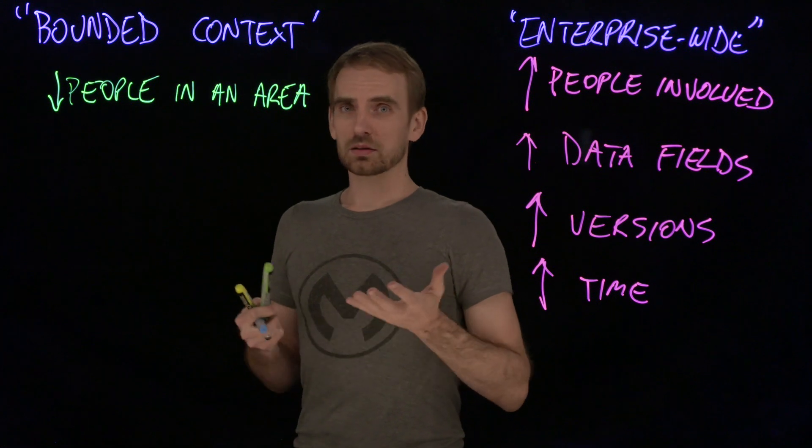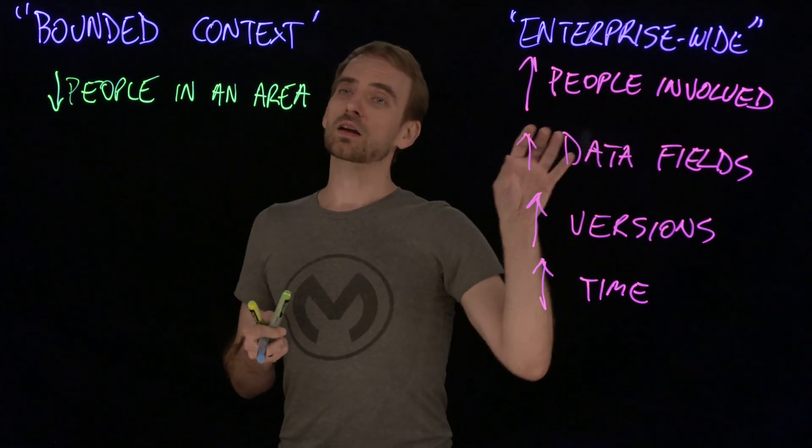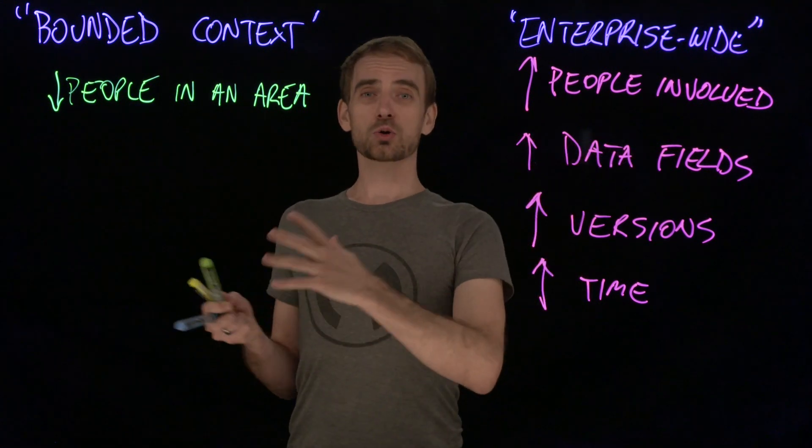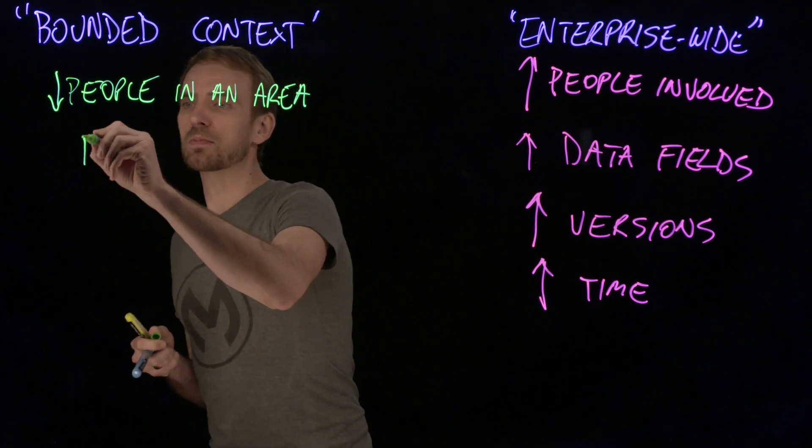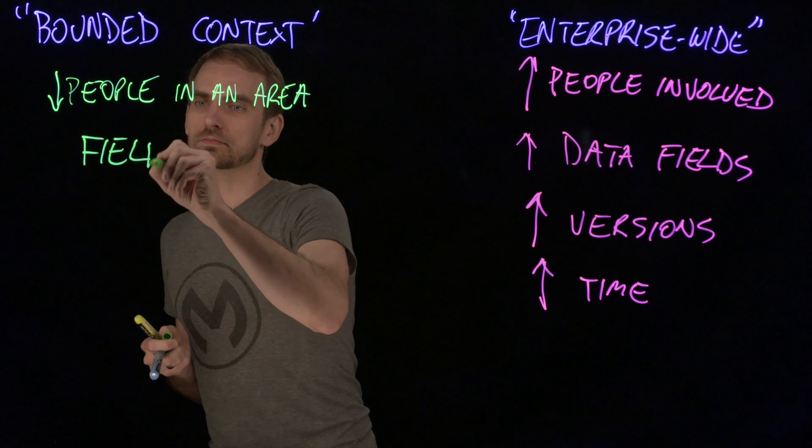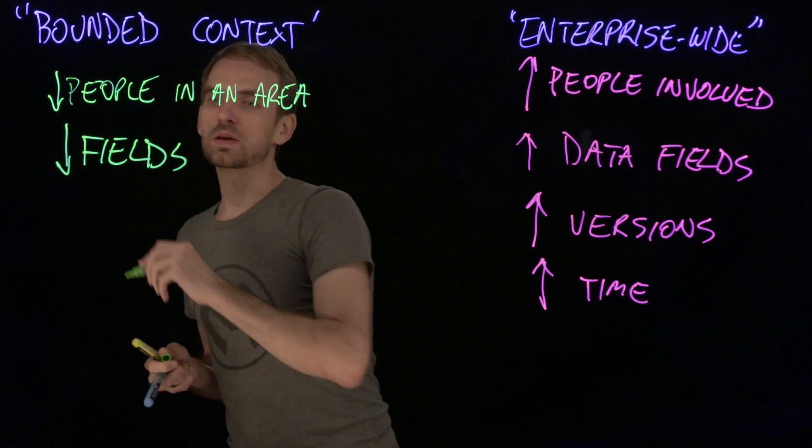Now as far as the number of fields, well, because you're narrowing the scope, naturally you're going to get a subset of the total fields across your entire organization. So fields should be manageable.